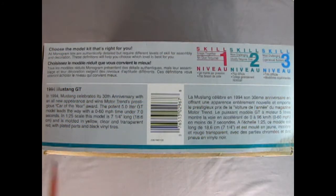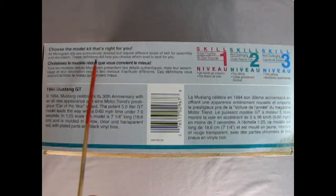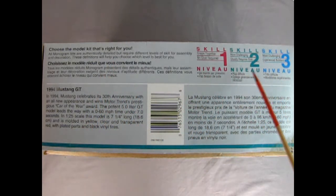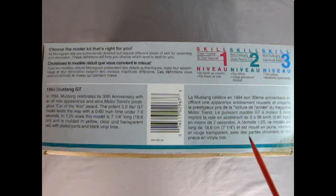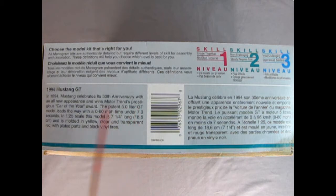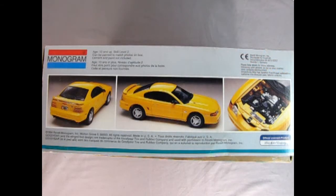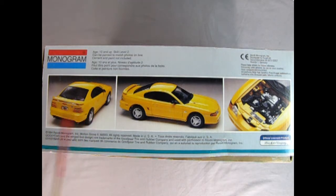On this side of the box we get the old choose the model kit that's right for you. Skill level 1, 2 or 3. This one is a skill level 2 kit for ages 10 and up and will require paint and glue. Then we also get this wonderful write-up of our 1994 Mustang GT. On this side of the box we can see our wonderful Mustang. Now this is the 30th anniversary of this car because the original Mustang came out in 1964. So here we have the rear three-quarter and the side shot as well as up underneath the hood.